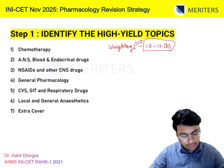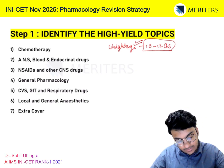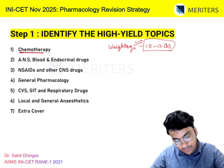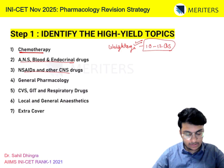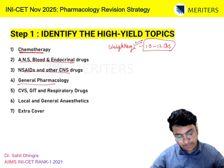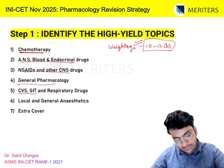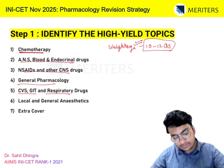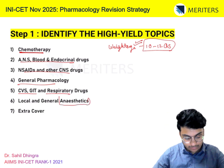In Pharmac there are 7 chapters broadly: Chemotherapy, ANS, Blood and Endocrine, NSAIDs and other CNS drugs, General Pharma (which includes biotransformation), CVS, GIT and Respiratory drugs, and Local and General Anesthesia along with extra cover.